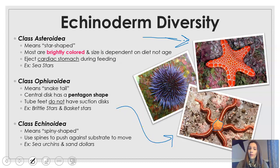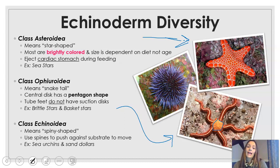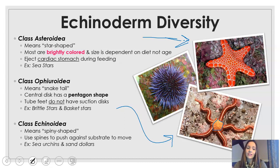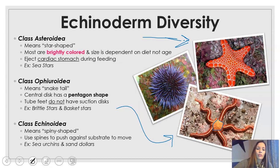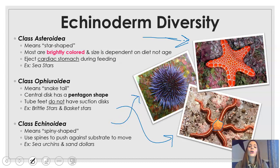The last class on this slide is class Echinoidea, which means spiny shaped. The entire phylum means spiny skinned, but this class specifically means spiny shaped because they have prominent spines — things like sea urchins — and they actually move by pushing those spines against the sand.